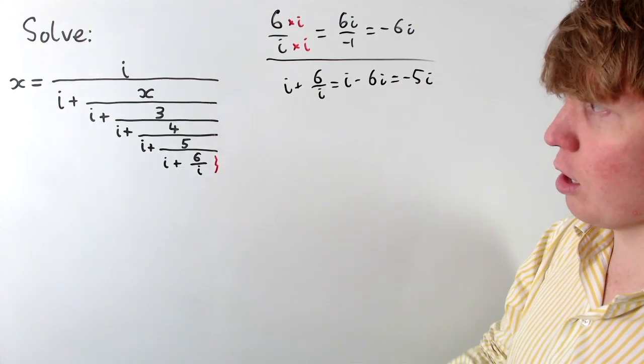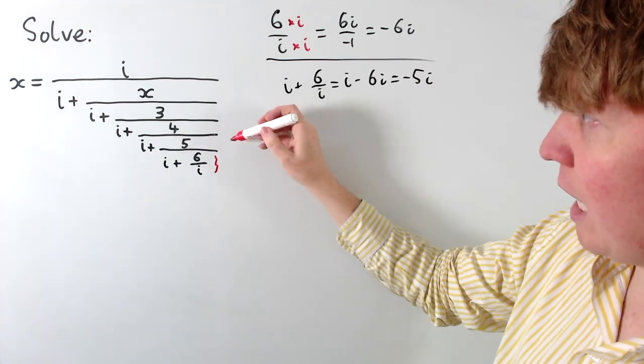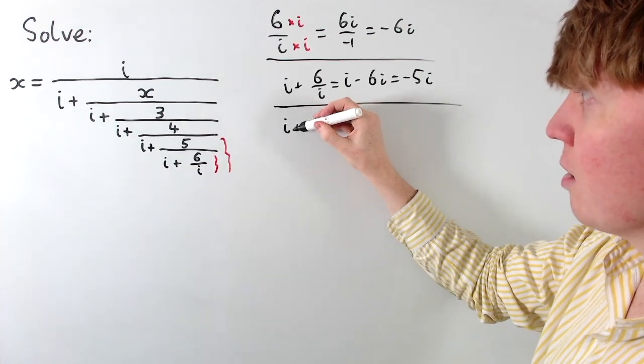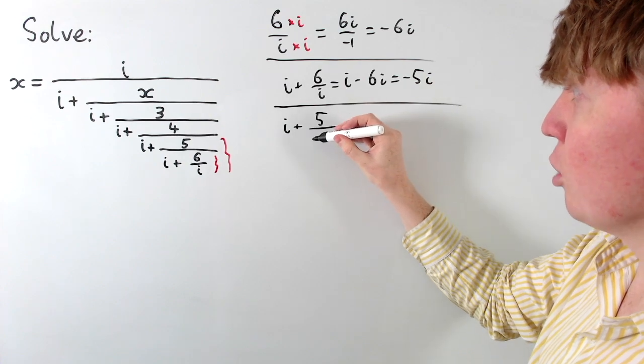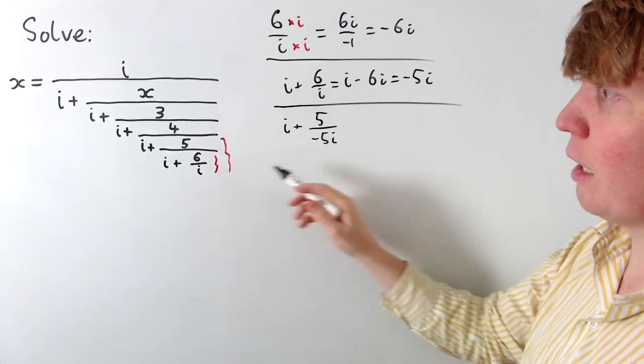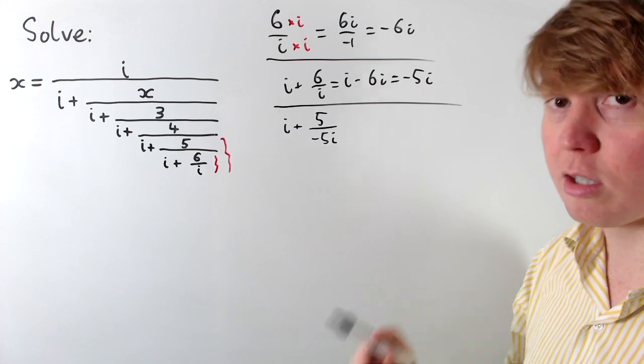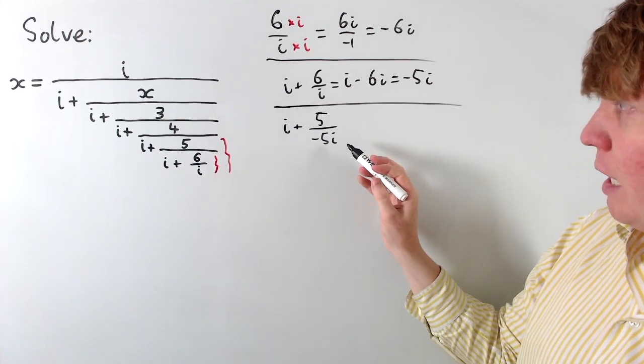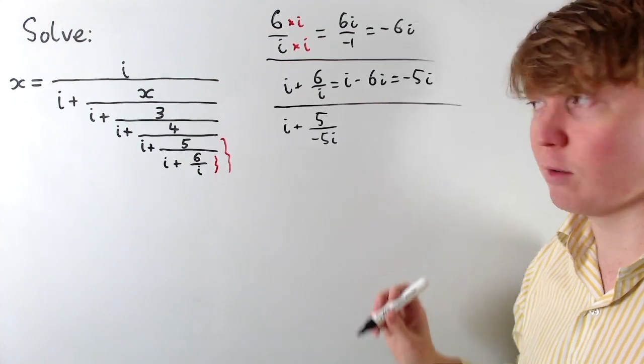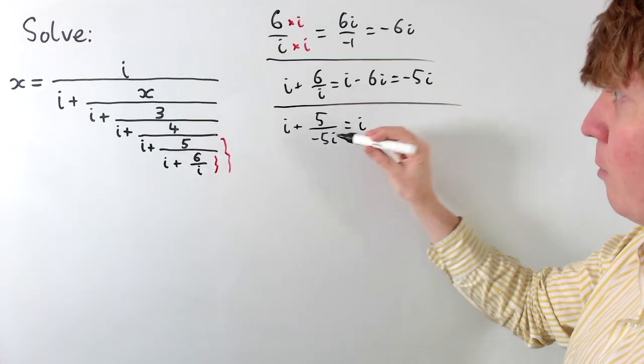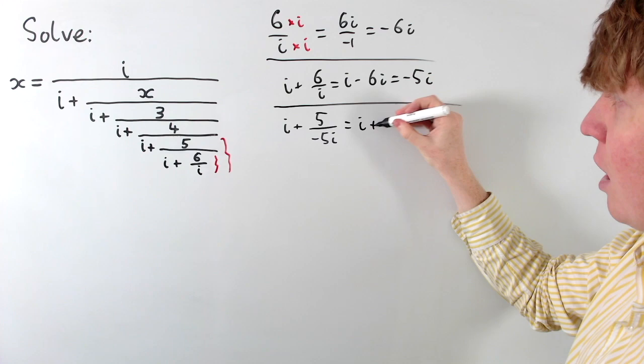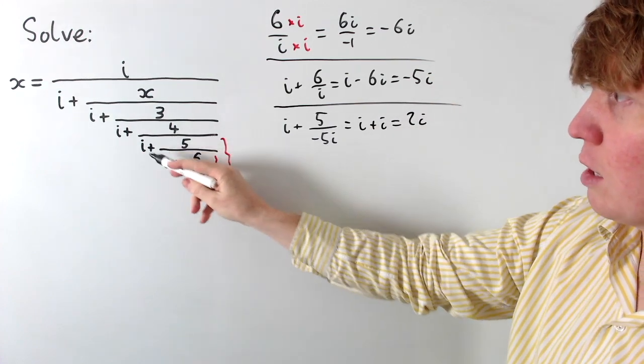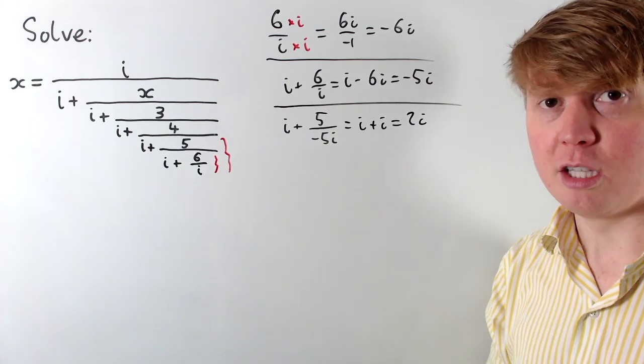So that's the first bit done, and then if we want to move upwards to i plus 5 over this expression, we can now write this whole expression as i plus 5 over negative 5i, because we know that this lower fraction is just negative 5i. And again here, where we've got the 1 over i term, we just replace this by a negative i, so we're going to get i plus 5 over 5 times i, so just i plus i, and then we get 2i for all of this expression down here underneath the 4.